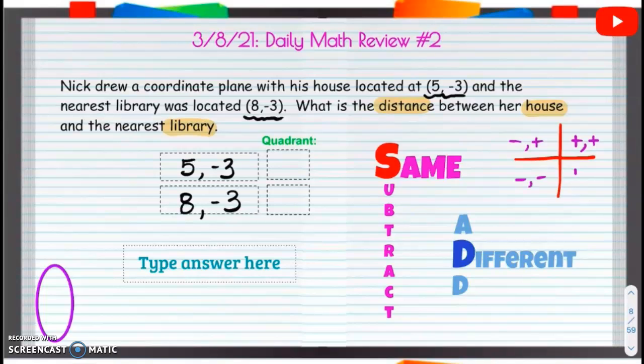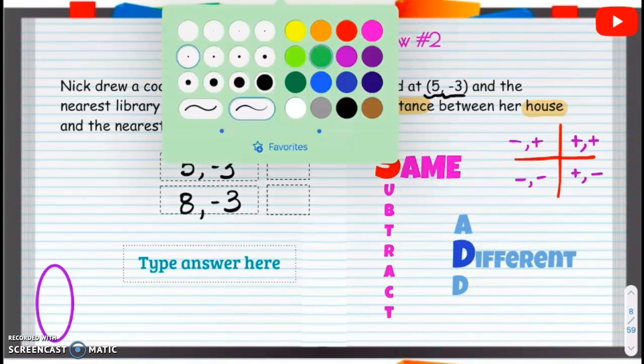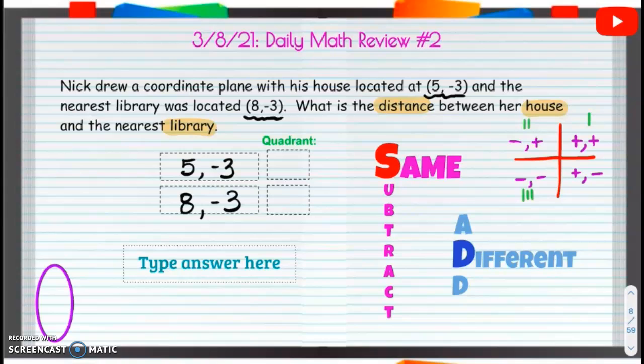Backwards and down, negative, negative. Forward, positive, down, negative. So, quadrant 1, 2, 3, and 4.